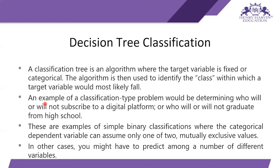An example of a classification problem would be determining who will or will not subscribe to a digital platform, or who will or will not graduate from high school — answering yes or no. These are examples of simple binary classification, where we have two classes. The categorical dependent variable can assume only one of two mutually exclusive values, and at any given time there is only one correct output.